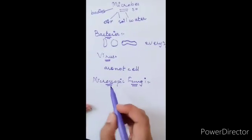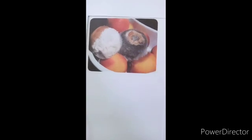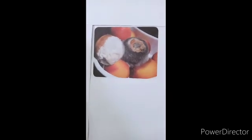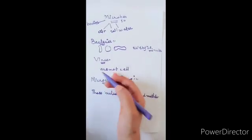Microscopic fungi. These include yeasts and molds. Molds grow in warm damp places. They are made up of lots of thin threads which grow over and inside the food. They reproduce by releasing spores into the air. Hope you understand about microbes.